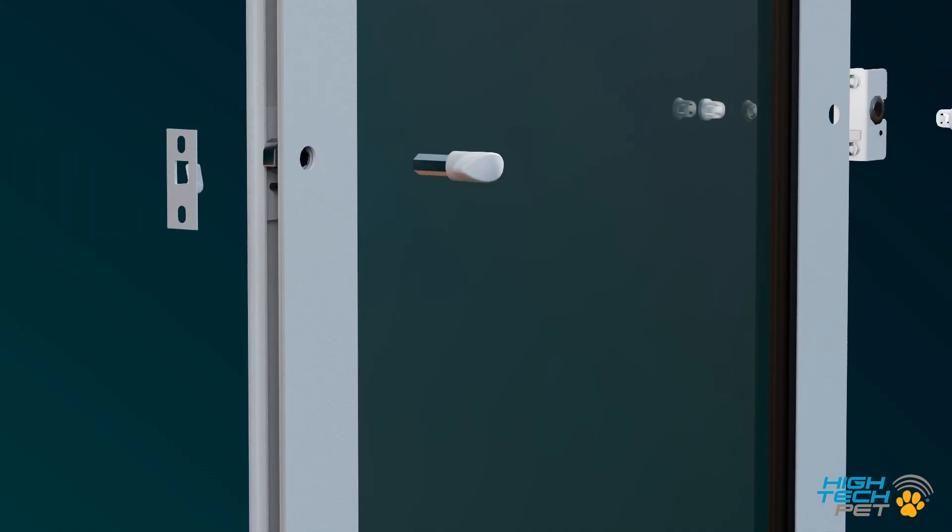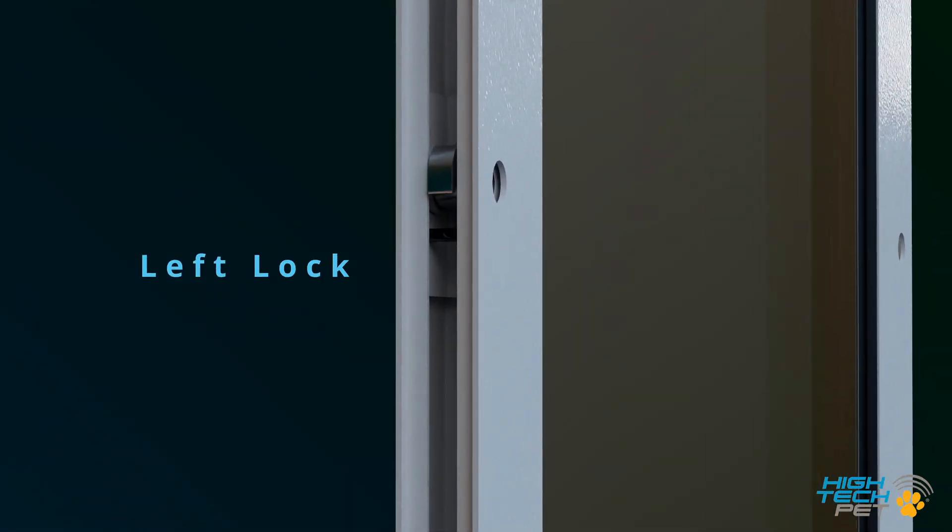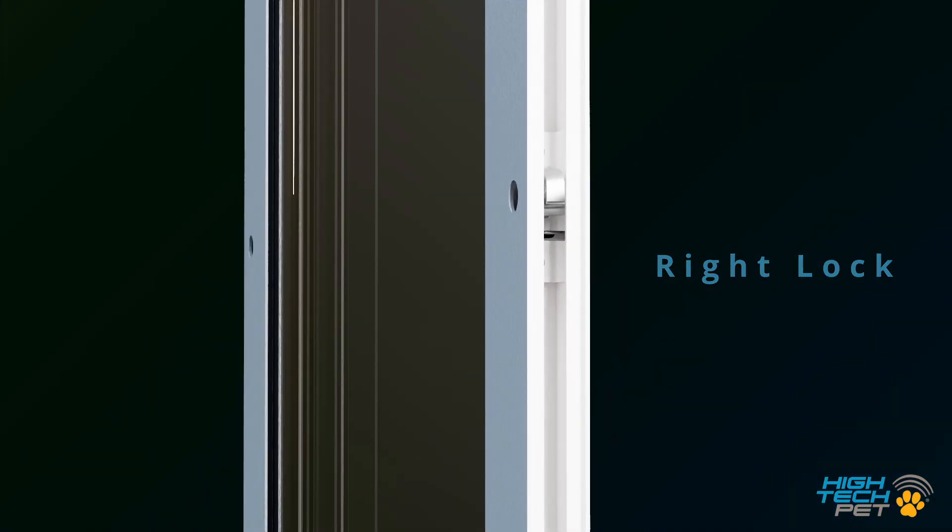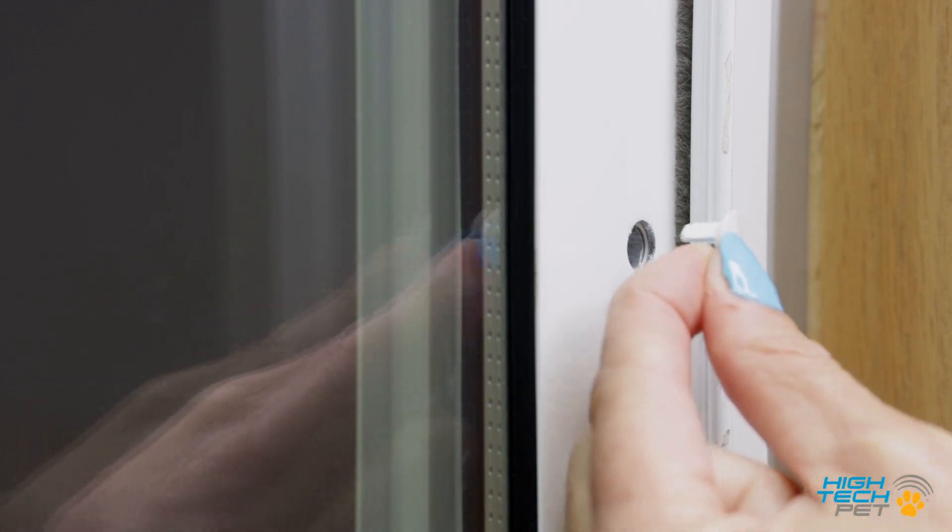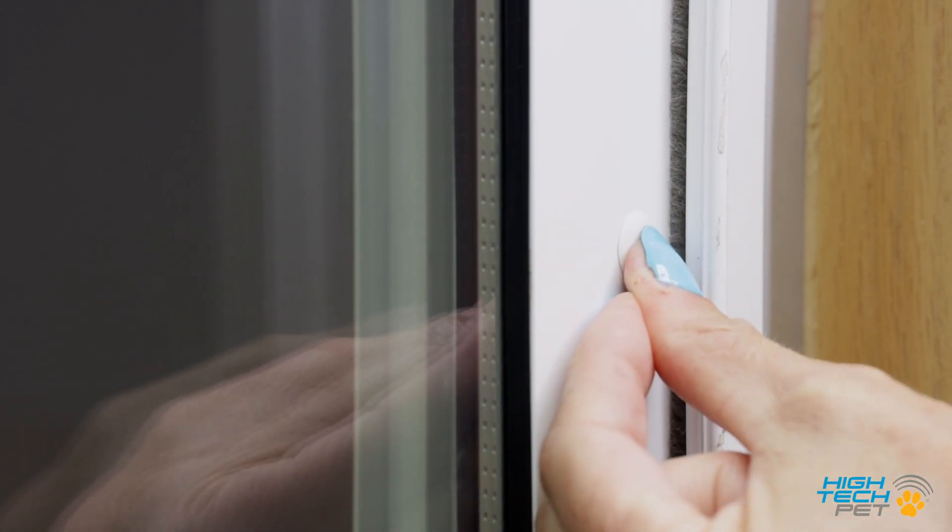The patio pet panel comes with pre-installed door locks allowing for installation on the right or left side of your existing patio slider. Only one of the two lock assemblies will be used so insert the plastic hole plug into the empty hole of the unused lock assembly.